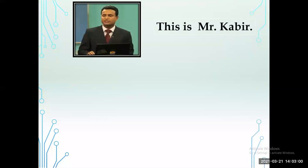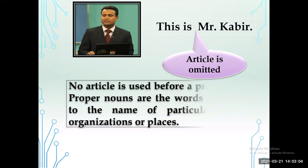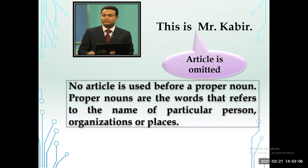Rule 3: 'This is Mr. Kobe.' Article is omitted because no article is used before a proper noun. Proper nouns are words that refer to the name of a particular person, organization, or place.